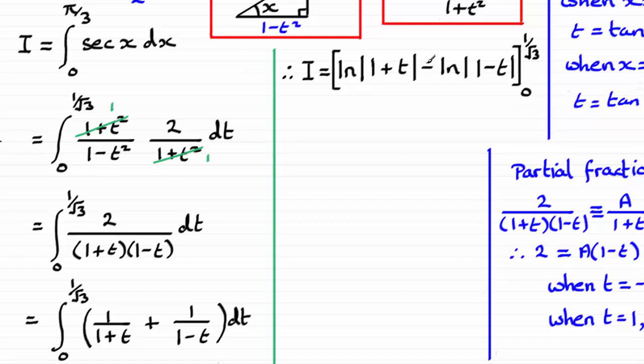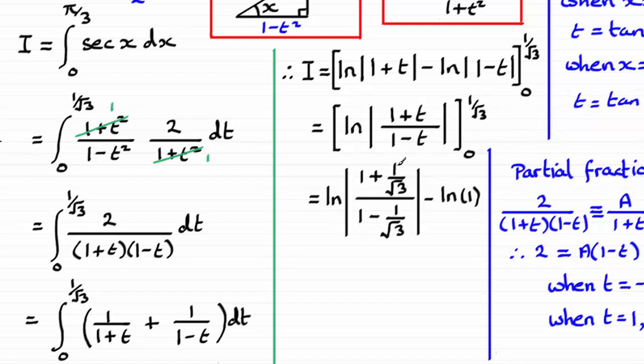And we can use the subtraction rule here for logs, and we end up with this result. Substitute our limits in, taking 1 over root 3 first of all. We end up with this term here. And then when you substitute 0 in, you get the natural log of 1, which is there. Now natural log of 1 is 0, so we're just left with this term here. I'm going to multiply top and bottom by root 3, and you end up with this value.